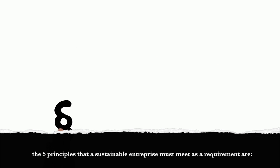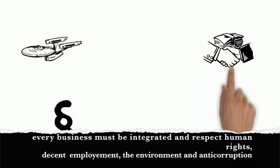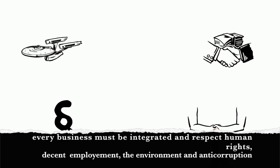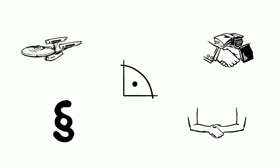The five principles that a sustainable enterprise must meet: Principle one — every business must be integrated and respect human rights, decent employment, and anti-corruption.